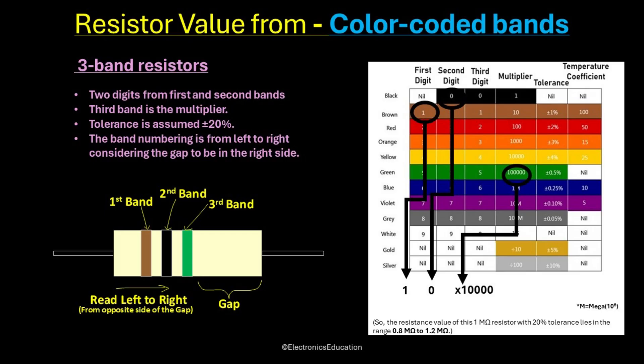Thus the resistor value becomes 1 megaohm with 20% tolerance. This means the resistance value can be anything between 0.8 megaohm to 1.2 megaohm.